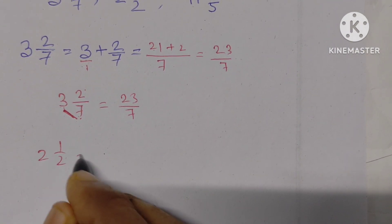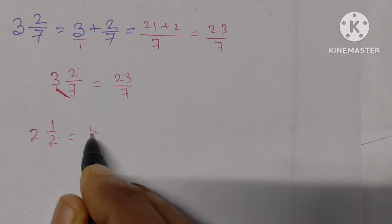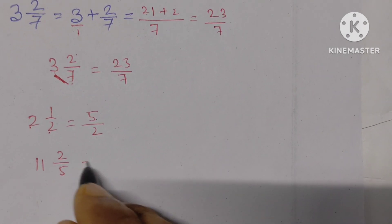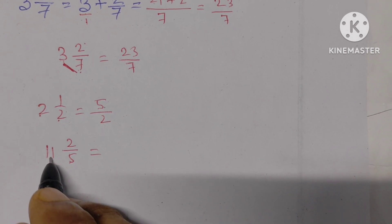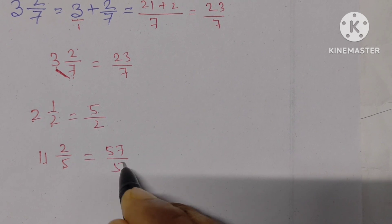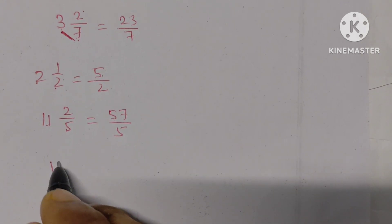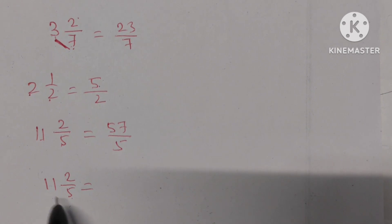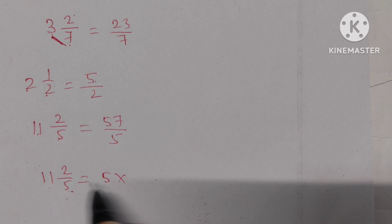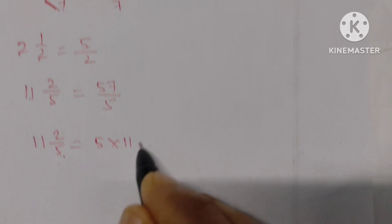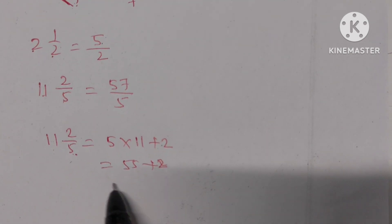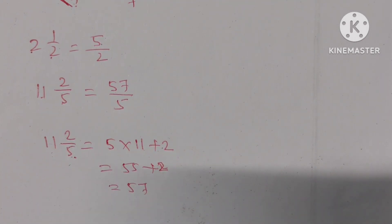Next: 2 and 1 by 2 — multiply 2 by 2 to get 4, plus 1 equals 5. So it is 5 by 2. Next: 11 and 2 by 5 — multiply 5 by 11 to get 55, plus 2 equals 57. So 11 and 2 by 5 equals 57 by 5.